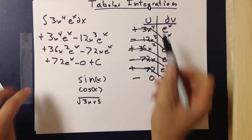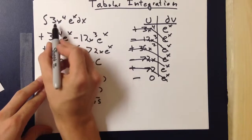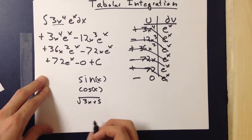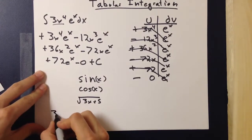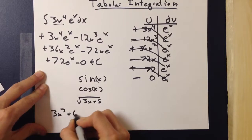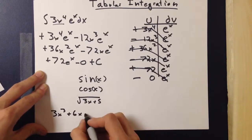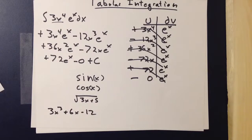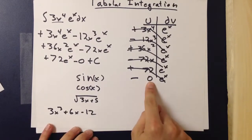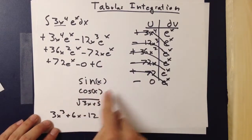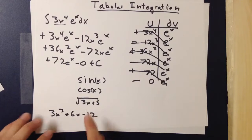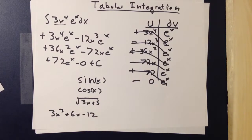Remember that the left side, u, must always be a polynomial, such as 3x to the fourth. Also remember that it doesn't need to be a single term — it can also be 3x cubed plus 6x minus 12. Either way, whatever is a polynomial will eventually go to zero. So as long as it is paired with something that repeats, it is a candidate for tabular integration. Thank you.